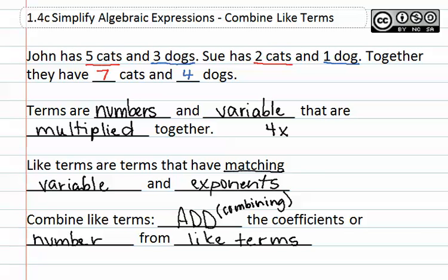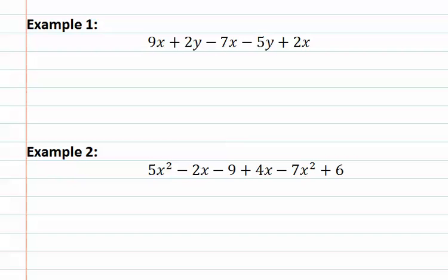We will now look at an example of this. In example one, we see that there are a variety of terms. In this case, there are five terms: 9X, 2Y, negative 7X, negative 5Y, and a positive 2X.